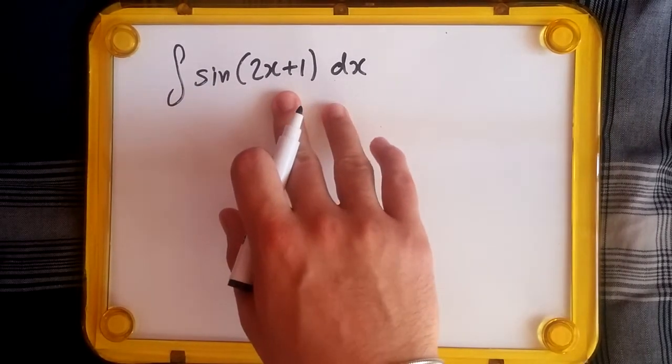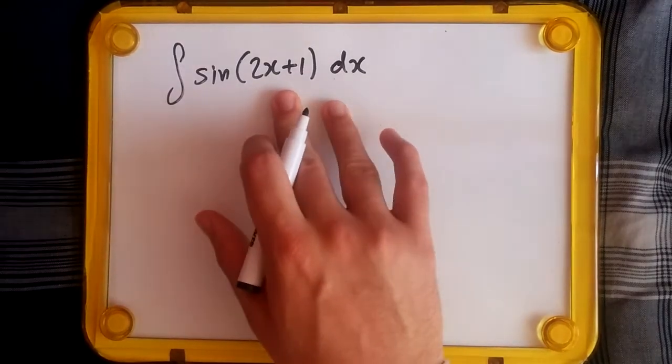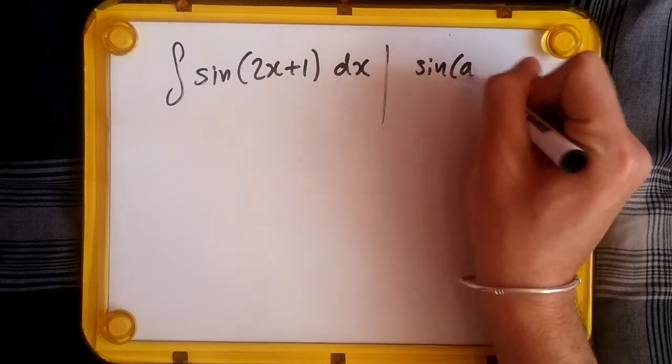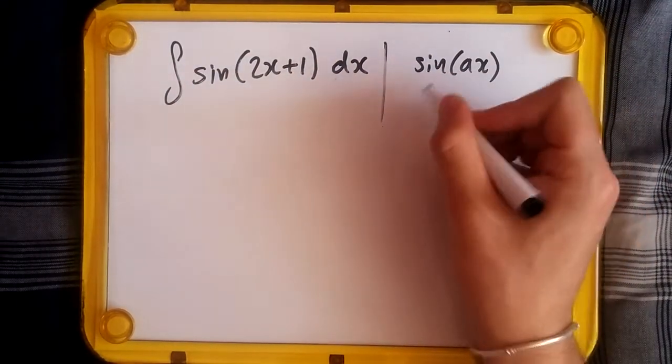Now this is just a standard integral. All we need to know is how to integrate a general sine. If we suppose we had a constant ax inside, integrating this will just give us cos ax.